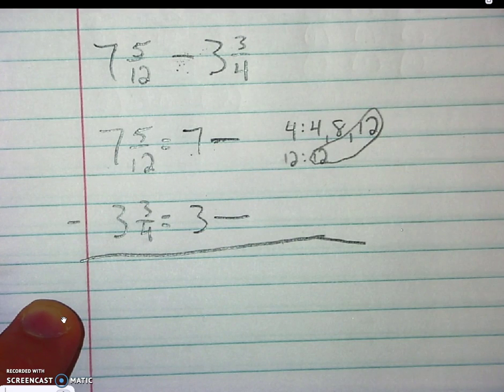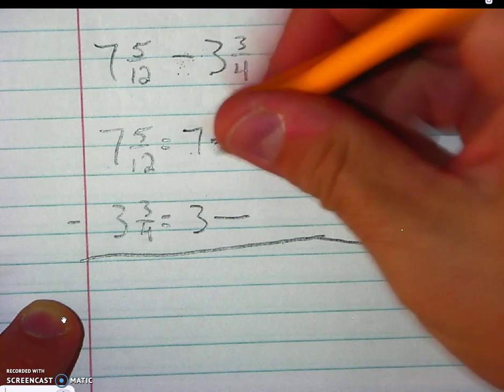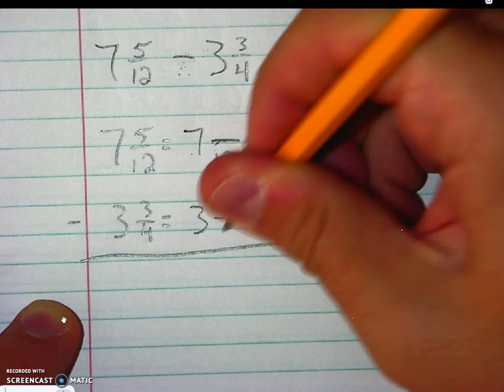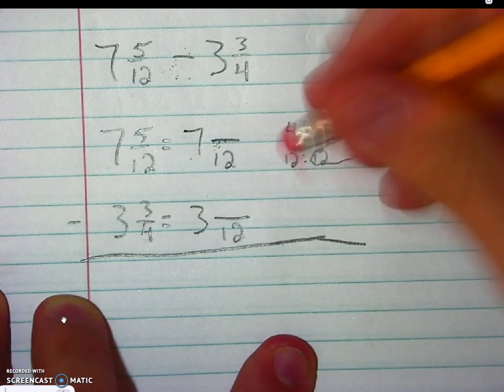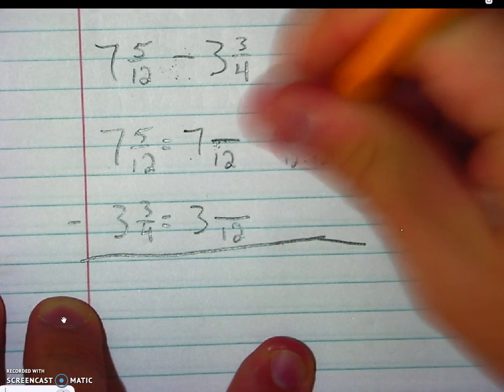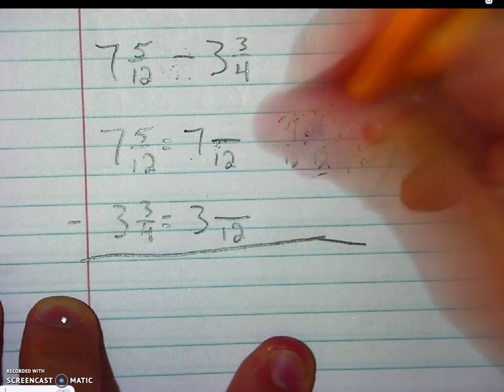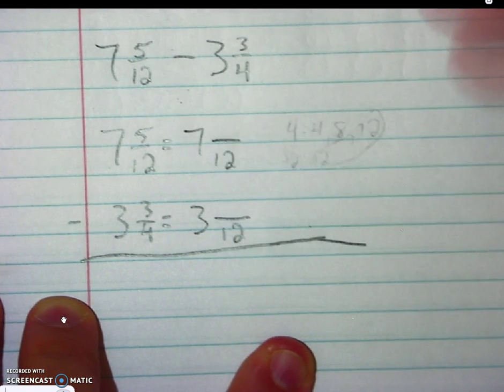We do have a common multiple of 12 that comes up pretty quickly. So I'm going to go ahead and put my 12 here and here. And that is always just using those multiples to come up with that common denominator.